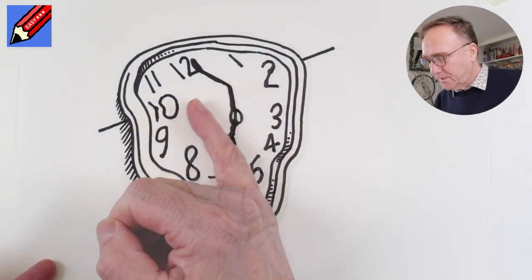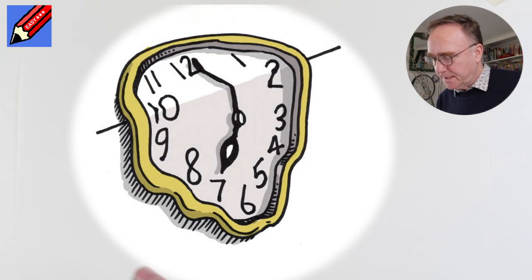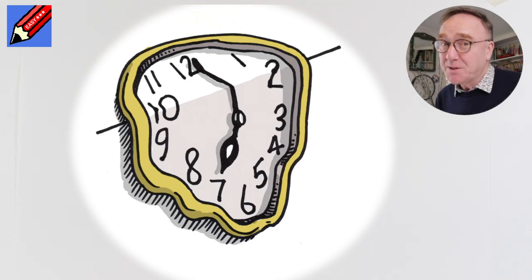If you make this part slightly grey then that will kind of change things, and some extra little bits of shadow, and there you go, how to draw a melting clock.